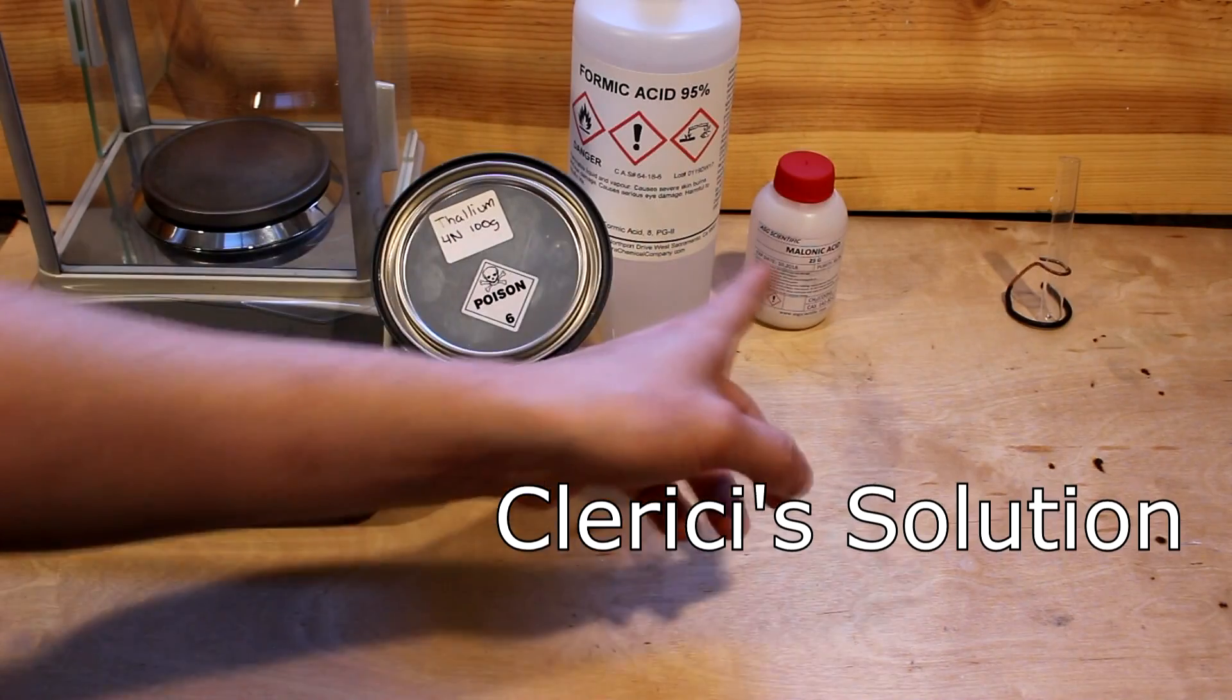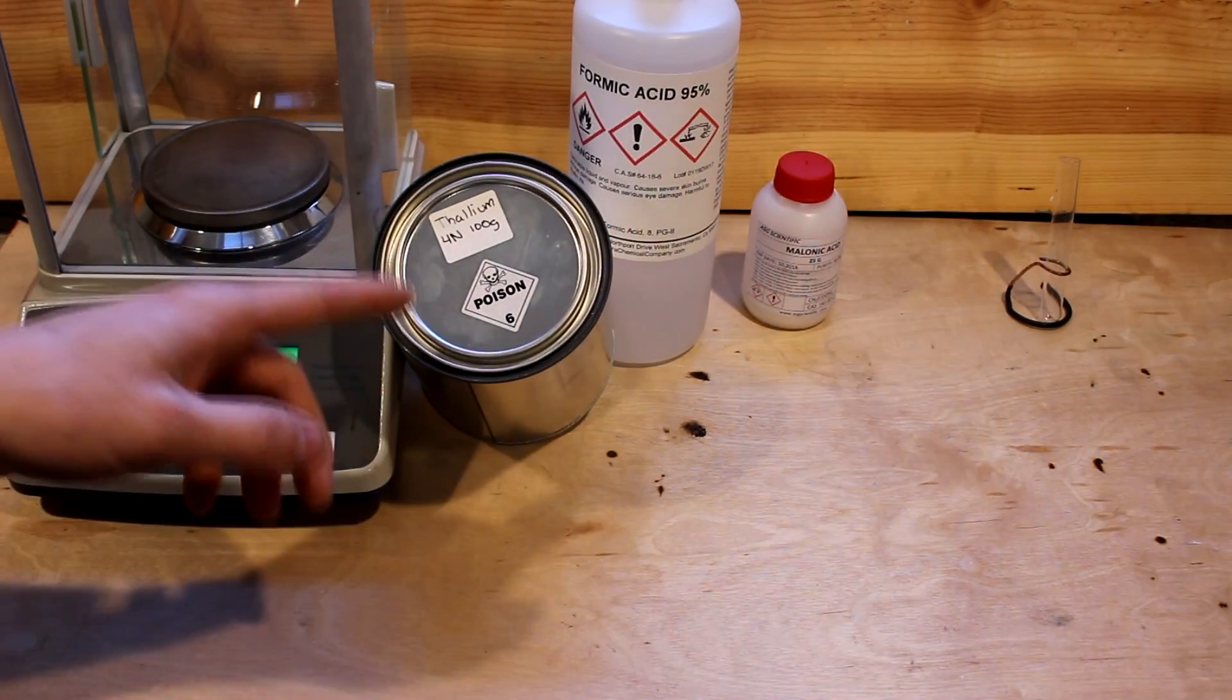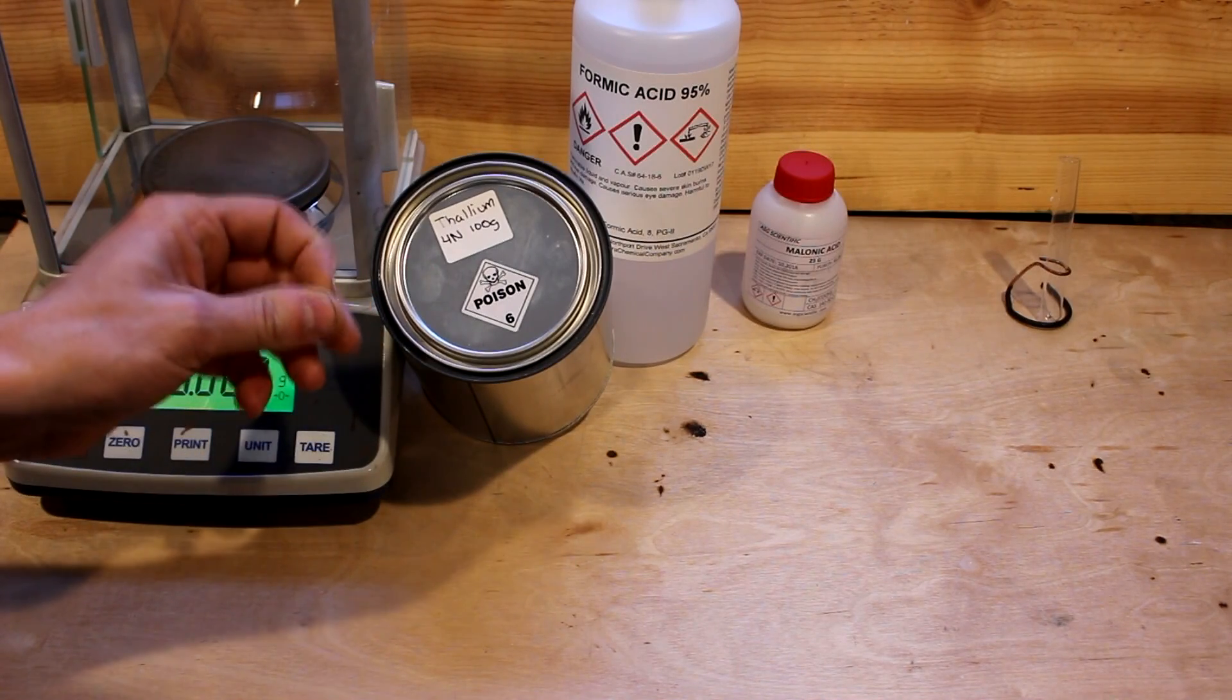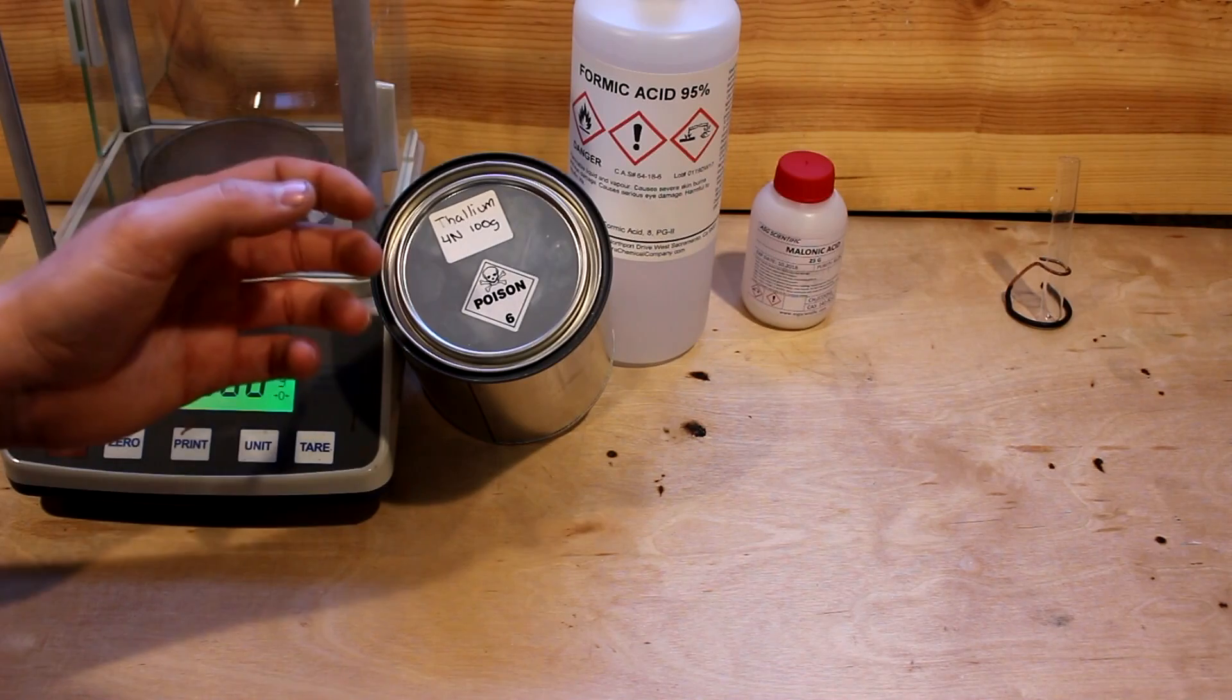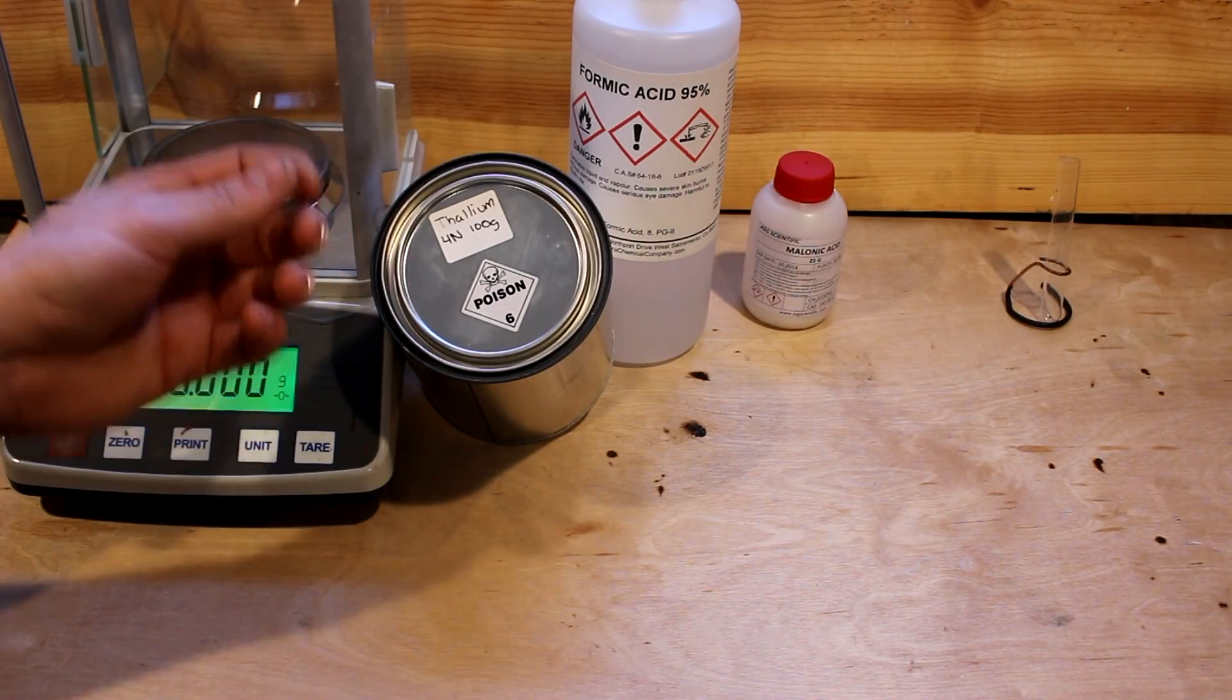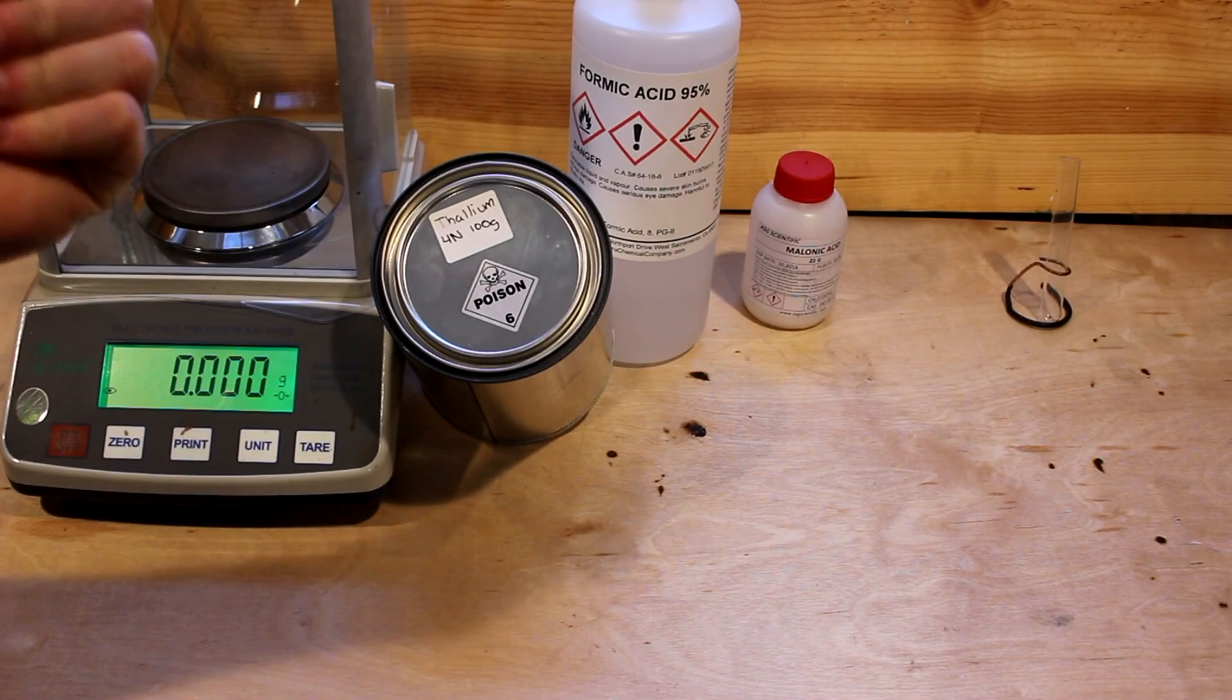This is actually two salts dissolved in water and both of them are thallium-based. Thallium, of course, is well known for its use as rat poison because its salts are tasteless, odorless, and incredibly soluble in water, which makes it very useful for making dense liquids, but also incredibly toxic.